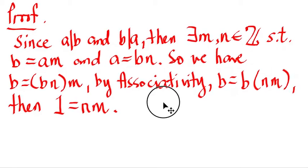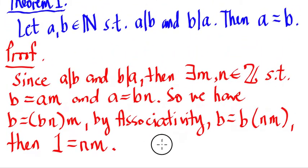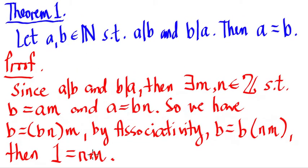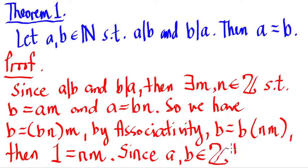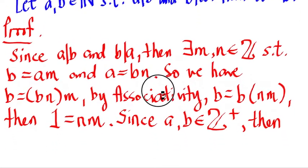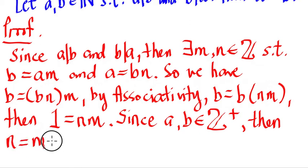Remember in our theorem that a and b are positive integers — they are part of the natural numbers. Since both a and b are natural numbers, they are both positive, so we cannot use the negative values of n and m. Since a and b are positive integers, we can only get the positive values of n and m. Therefore, n is equal to m is equal to 1, since 1 times 1 is 1.